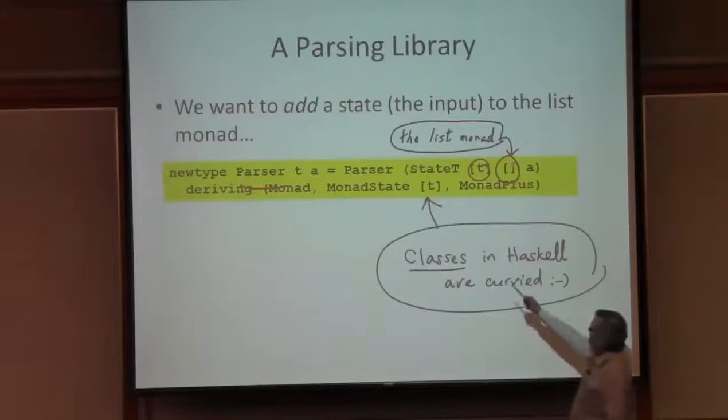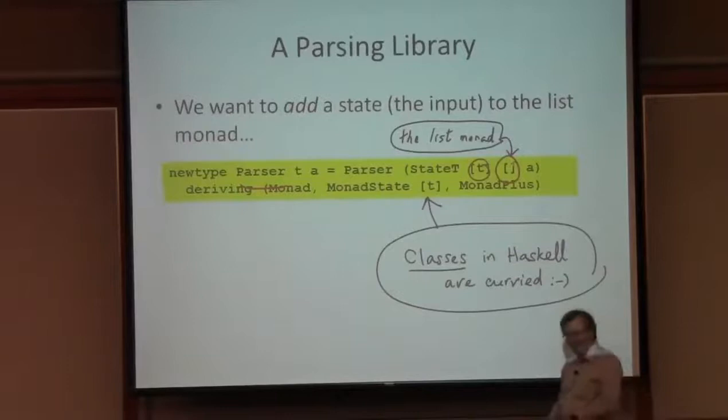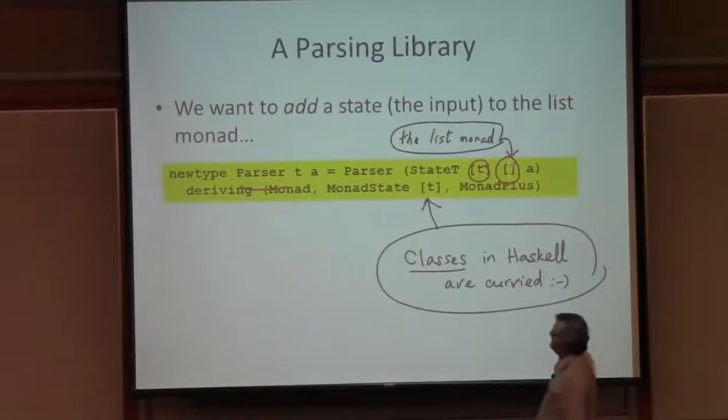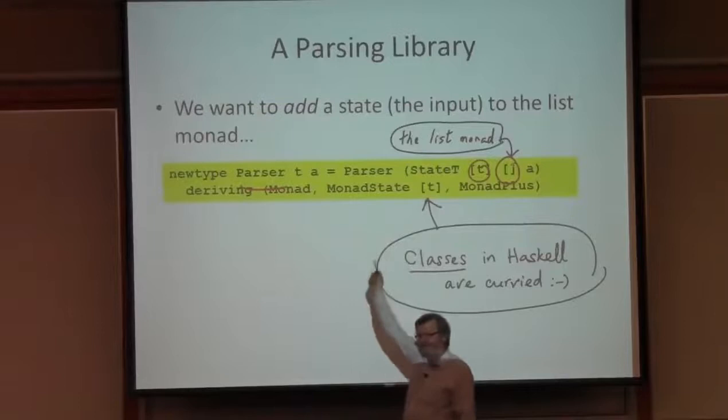You can also see here that Haskell classes are curried. Remember, MonadState had two parameters: the type of the state and the type of the monad. Here it's being used with just one parameter, the type of the state, and that's equivalent to a one-parameter class, which is the only thing that you can put in this deriving clause.